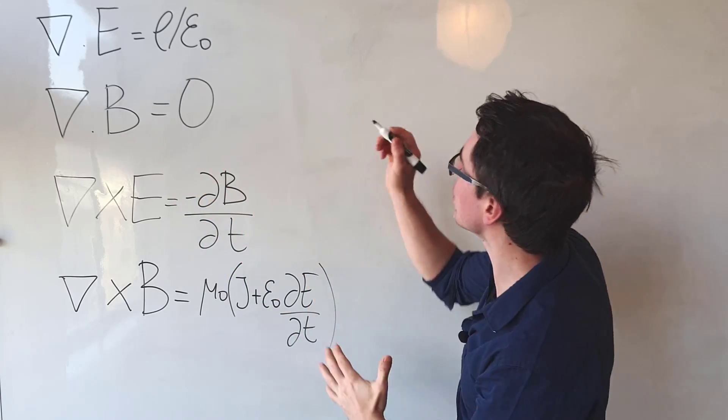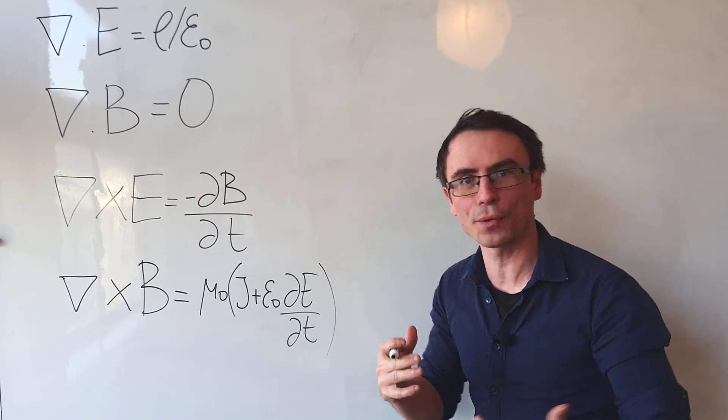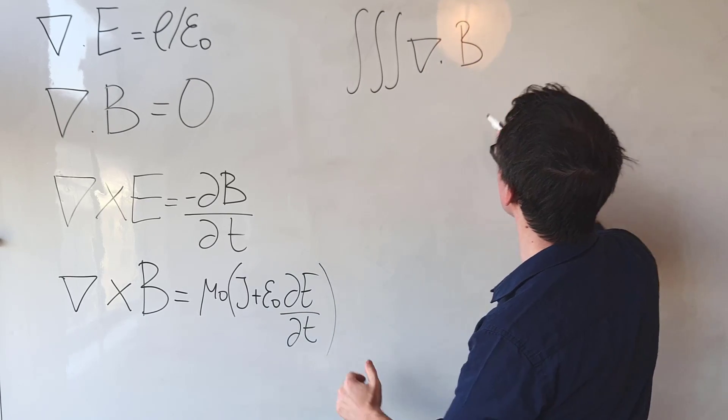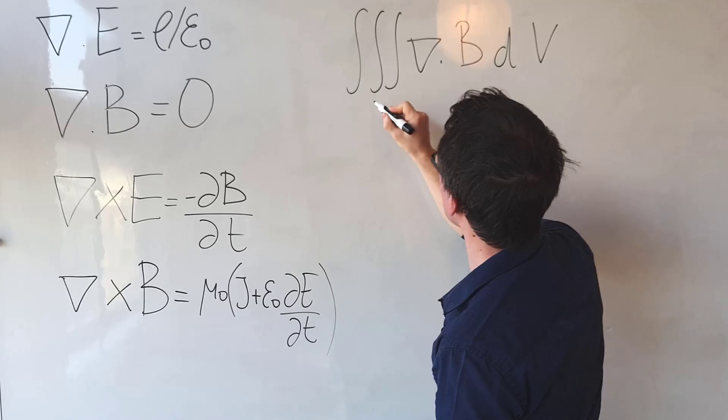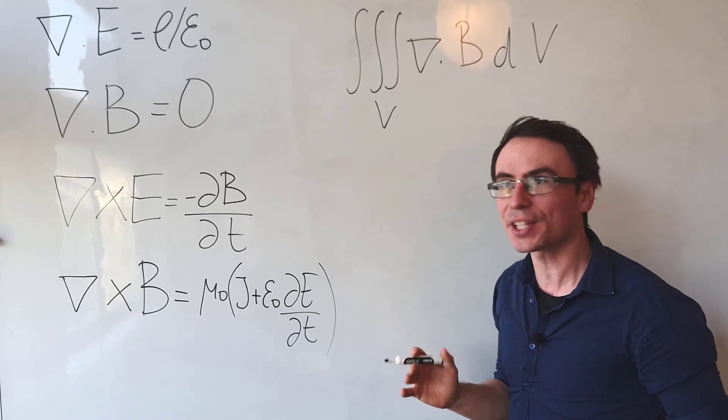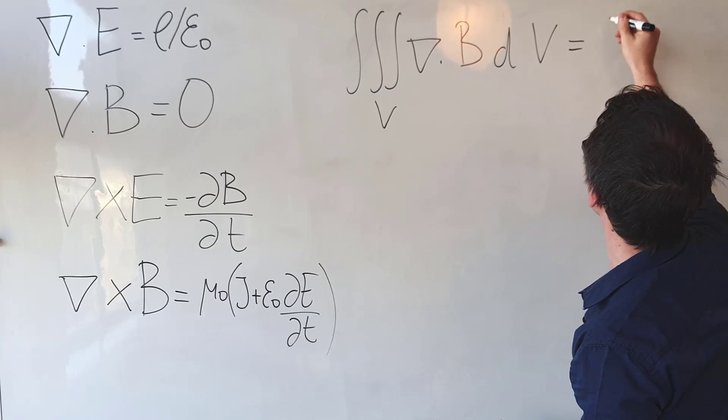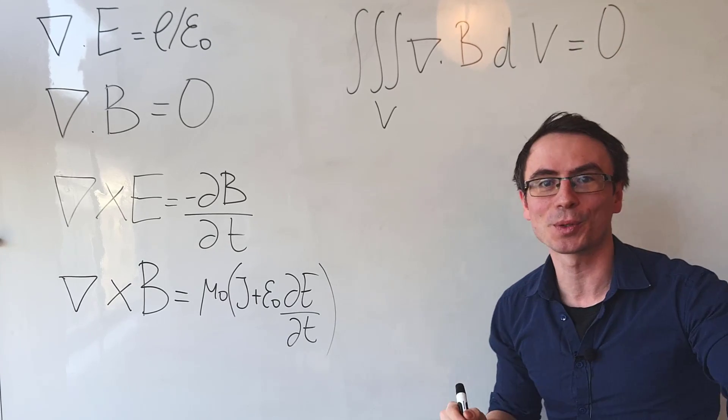What I'm going to do is take this equation and integrate it over a volume. The integral of the divergence of B dV over a volume—if the divergence is zero, then this volume integral will equal zero.